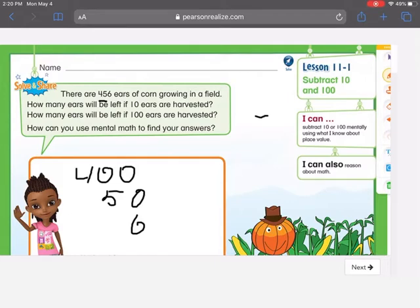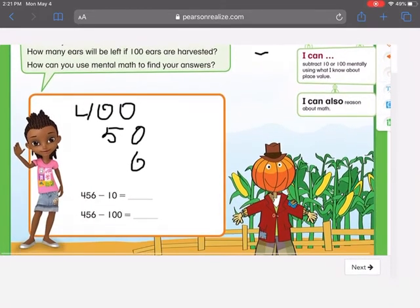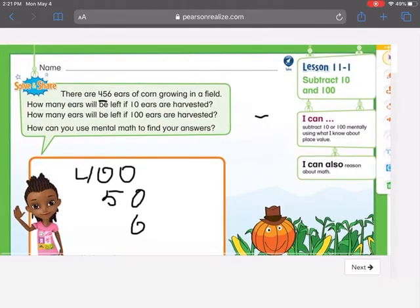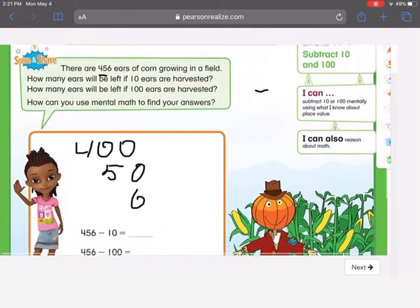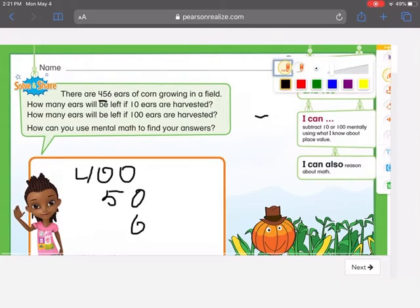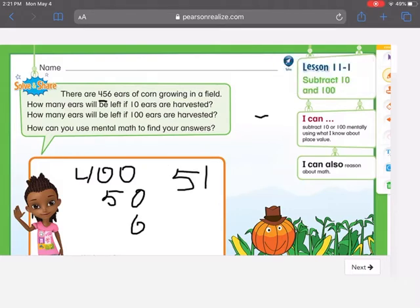Now the first question wants to know what happens if we subtract 10. And what we know about place value is that all you have to do is subtract the digit that falls under that place value. So if we're going to subtract 10, we're really subtracting 5 minus 1 because what's in the tens place of 456? Right, the number 5.